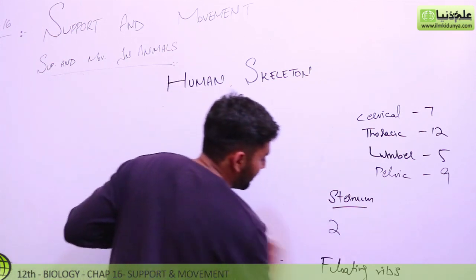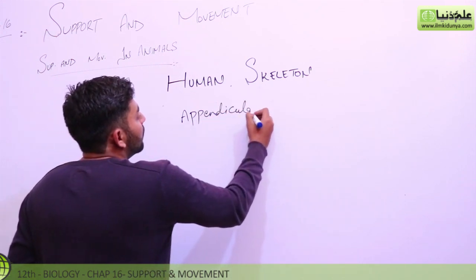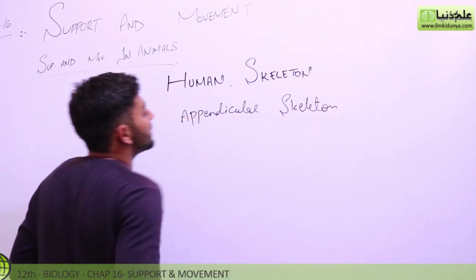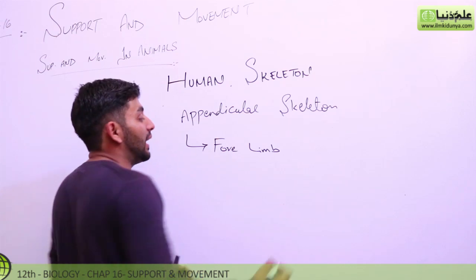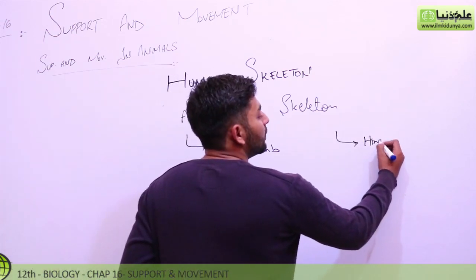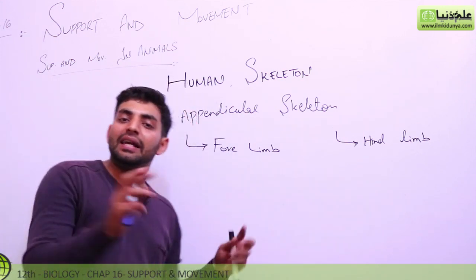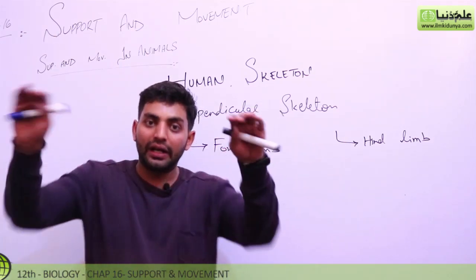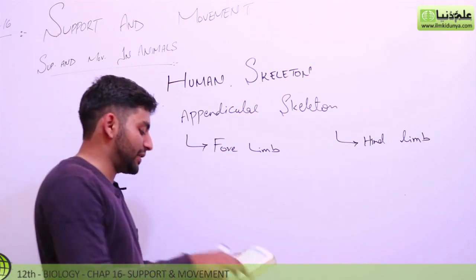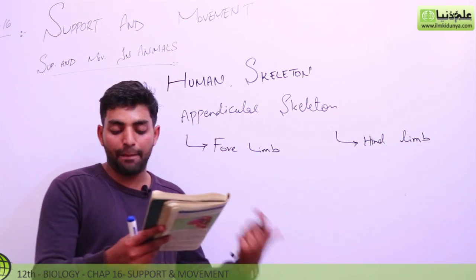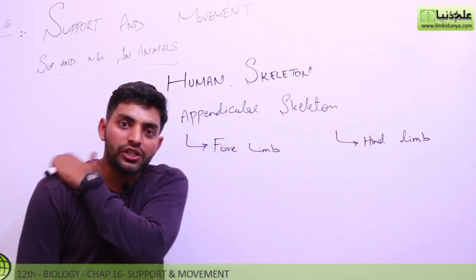The other part is appendicular skeleton. The appendicular skeleton consists of forelimbs and hindlimbs. The shoulder portion — the pectoral girdle — comes before the forelimbs. The pectoral girdle is comprised of scapula. The clavicle connects the scapula with the sternum — this is your scapula portion.